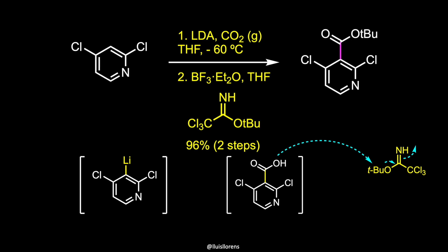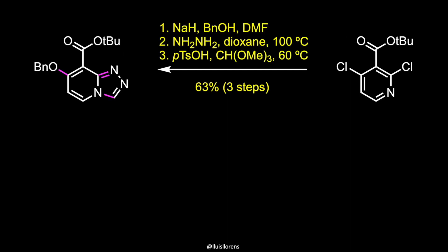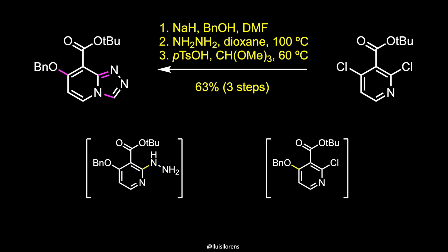An acid-catalyzed esterification employing an imidate gave the tert-butyl ester in 96% yield over two steps. Sequential nucleophilic aromatic substitution reactions with benzyl alcohol first and hydrazine next delivered an intermediate that was treated with trimethyl orthoformate under acidic conditions to give the triazolopyridine derivative in 63% yield over three steps.